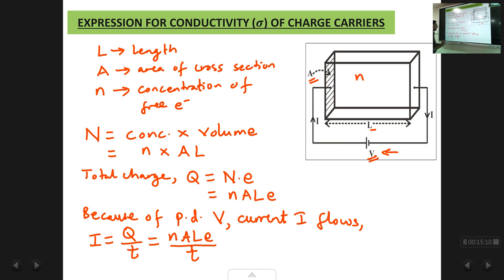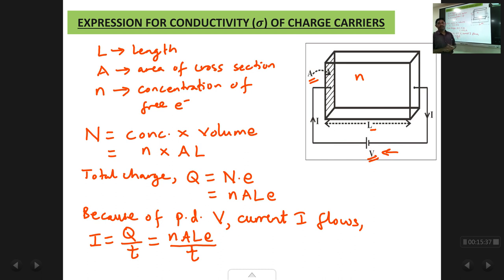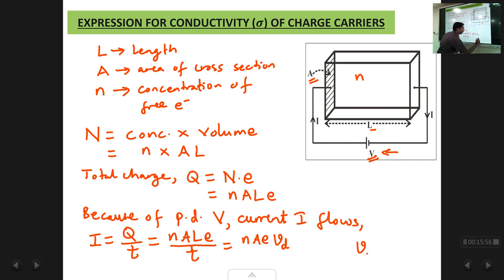Now, L/t is distance over time, which is a velocity — specifically the drift velocity Vd of the electrons, since all electrons travel length L in time t. So we get I = N·e·A·Vd. This is Equation 1, giving the current flowing in the semiconductor.